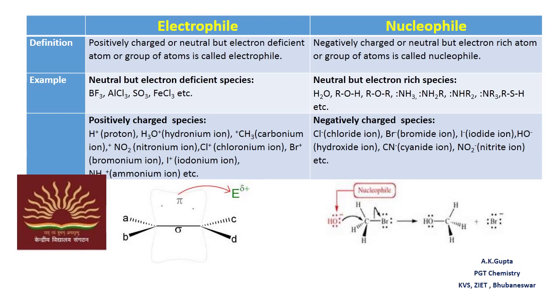The positively charged species will also act as electrophiles. For example: H+ (proton), H3O+ (hydronium ion), carbonium ion, NO2+ (nitronium ion), Cl+ (chloronium ion), Br+ (bromonium ion), I+ (iodonium ion), and NH4+ (ammonium ion). They are electron deficient and therefore they act as electrophiles.